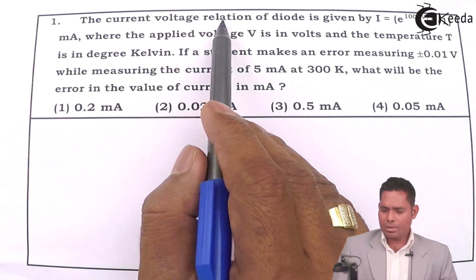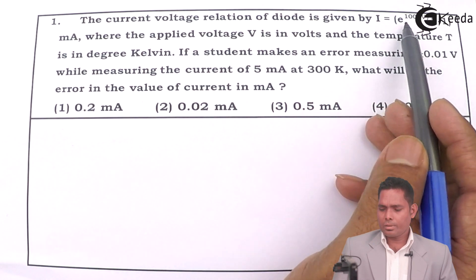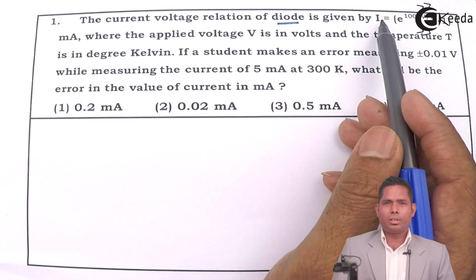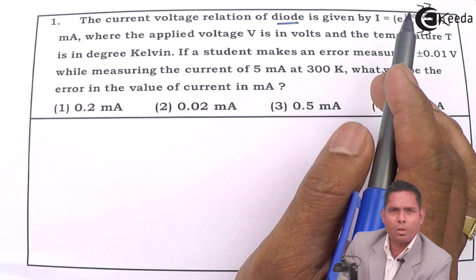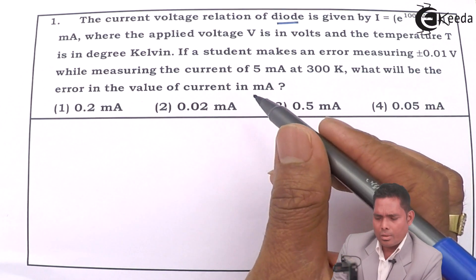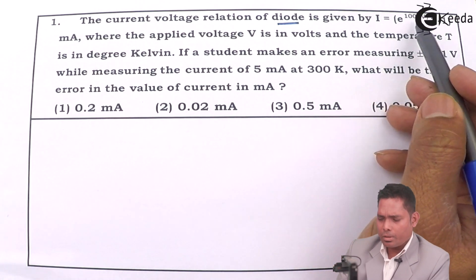The current voltage relation of diode is given by - so in case of diode, the relation between the current and voltage is not a linear relationship. It is something like exponential.